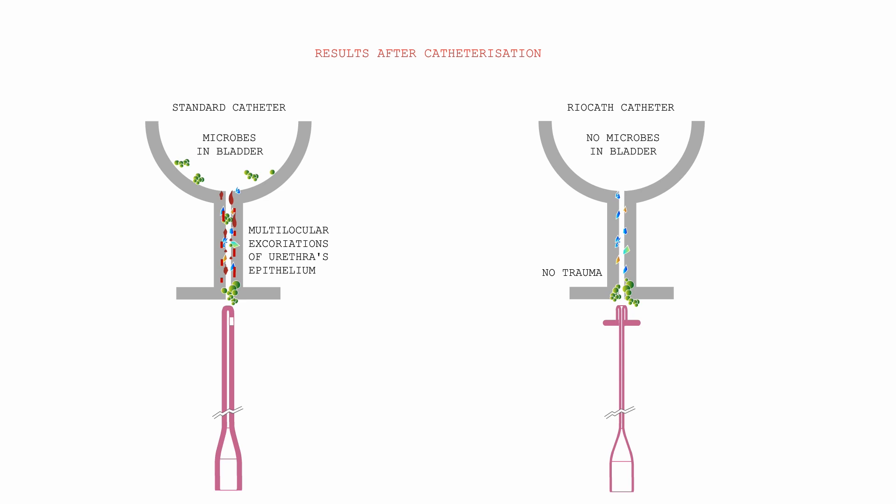On the other hand, with the Ryocath catheter there are no microbes in the bladder, no signs of trauma to the urethra, thus significantly decreasing any risk of post-catheterization complications.